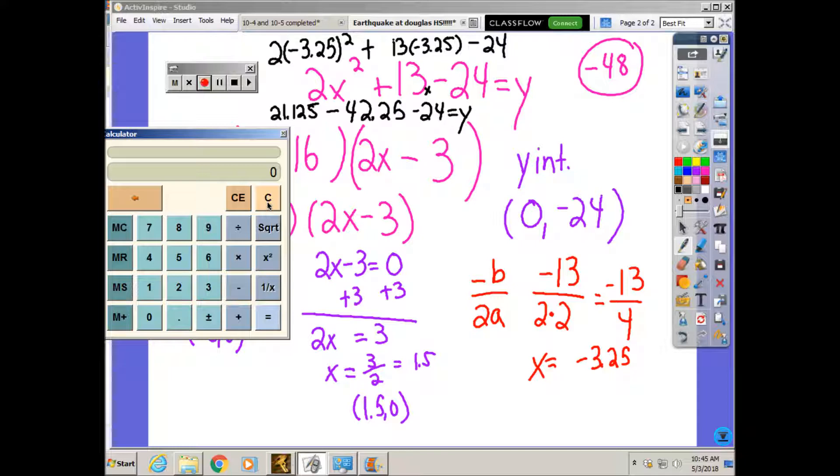And 21.125 minus 42.25 minus 24 is negative 45.125. But that means the vertex is two numbers.